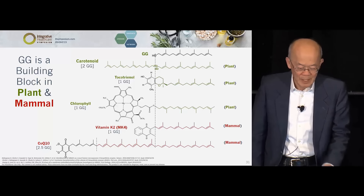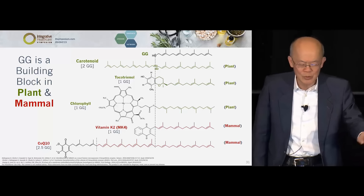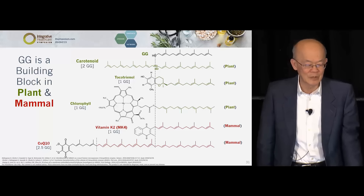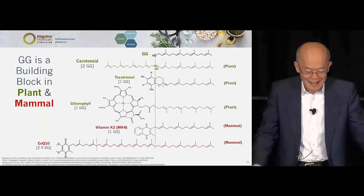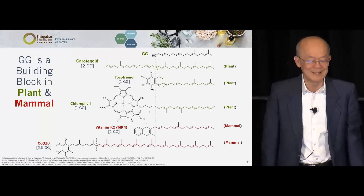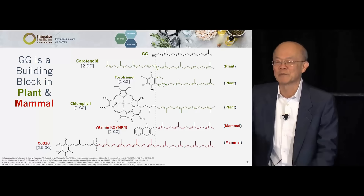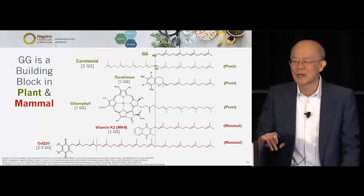Look at CoQ10. CoQ10 is like an albatross — it's just huge, it's hard to absorb. Everybody talks about bioavailability because they can't get it in. But if you take GG, two and a half molecules of GG is the entire tail of CoQ10. I bet you heard this for the first time. GG makes CoQ10, and GG makes MK4 — not MK7. I know many of you hear about MK7, but I'll come to that.